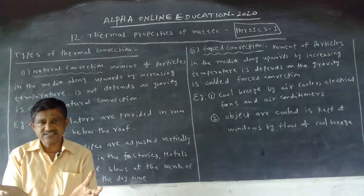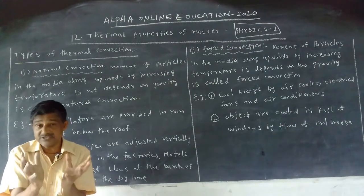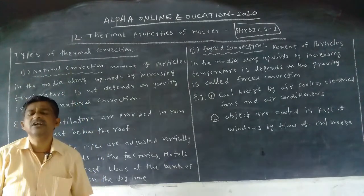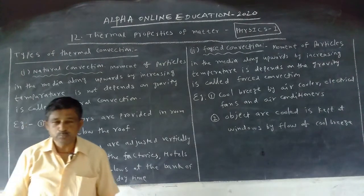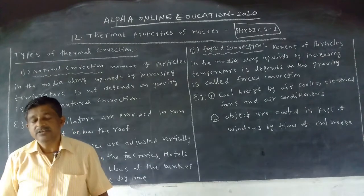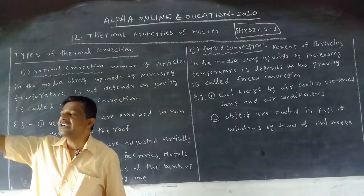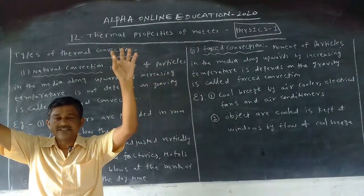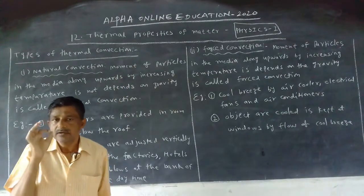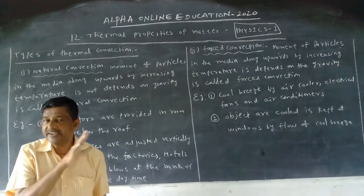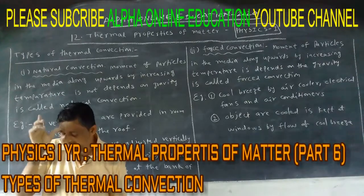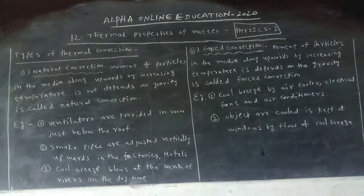When temperature increases, volume increases. So the gas molecules with more temperature have more volume, so density is less. The hot gases move upwards. Hot gases always want to move where empty space exists. Outside the room, empty space is more. That is why the hot gases are always ejected from ventilators. That is why in our houses or offices, ventilators are compulsorily provided just below the roof to send out hot gases by the process of thermal convection.